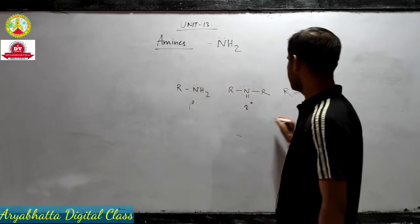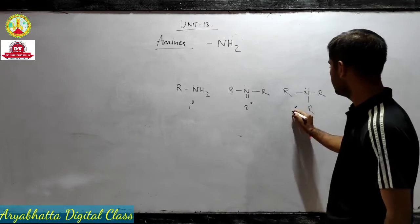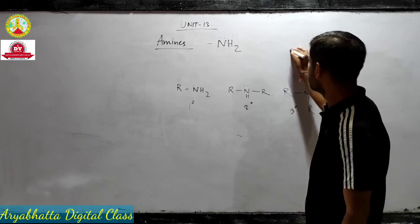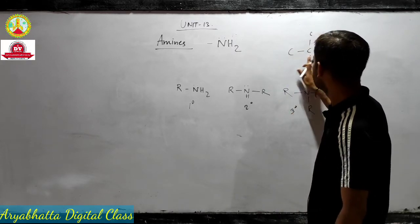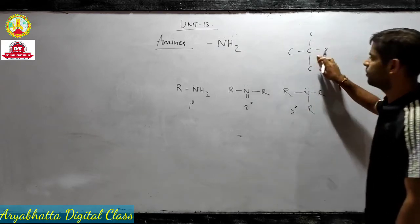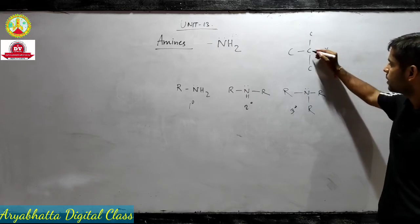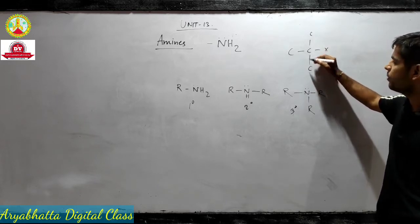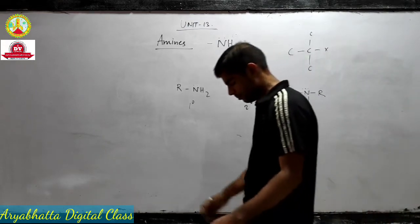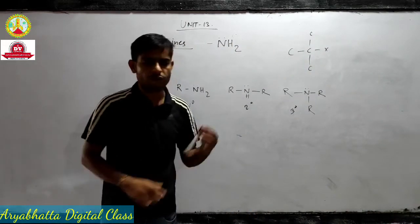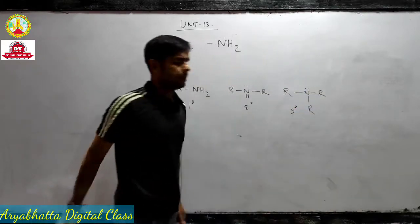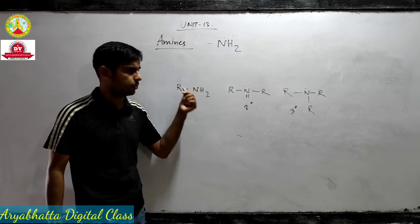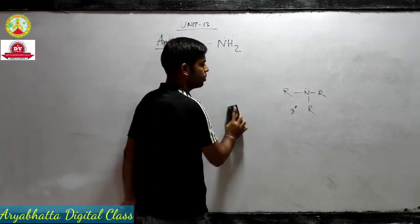So this is 1st degree, this is 2nd degree, and this is 3rd degree amine. In alcohol, aldehyde, or other compounds, we have a different system — we consider the carbon to which the functional group is attached and see whether it is surrounded by 3 carbons or 3 hydrogens to decide the degree. But in the case of amines, we look at the number of alkyl groups surrounding the nitrogen atom. This is basically the first classification of amines.